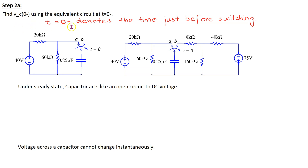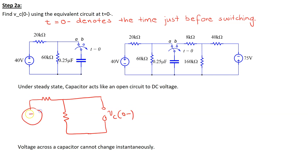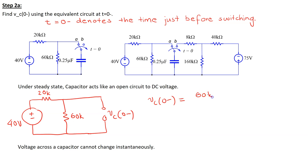We can determine Vc(0−) using the equivalent circuit at time t equals 0−. We replace the capacitor with an open circuit and then consider the rest of the circuit. The voltage across the capacitor is Vc(0−), and the remainder of the circuit has a 40-volt source and two resistors forming a voltage divider. Using the voltage divider principle, Vc(0−) is the voltage across the 60 kΩ resistor, which is 60K divided by (60K + 20K) multiplied by 40, giving 30 volts.